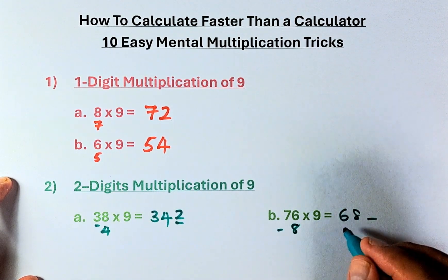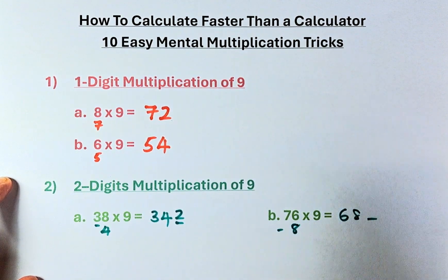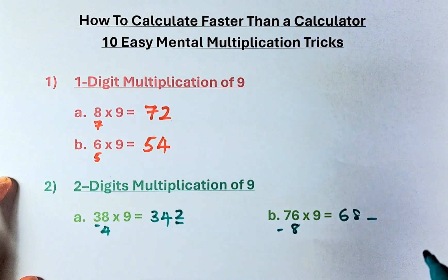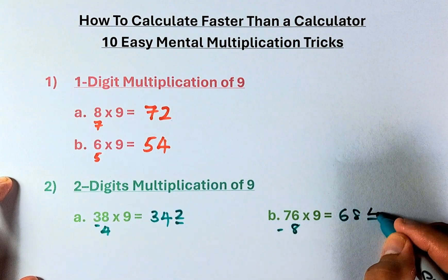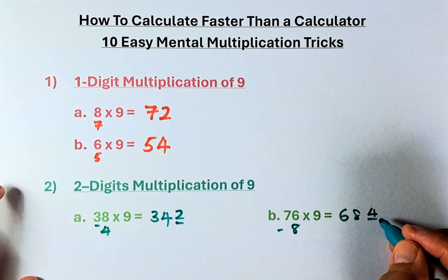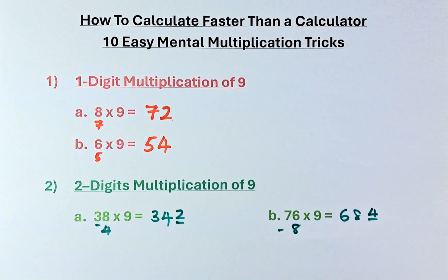And the last digit has to be, the adding of these 3 digits must be a multiple of 9. So 6, 8 is going to be 4, because 6 plus 8 plus 4 is 18. 18 is the multiple of 9.